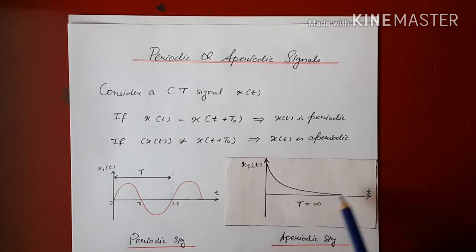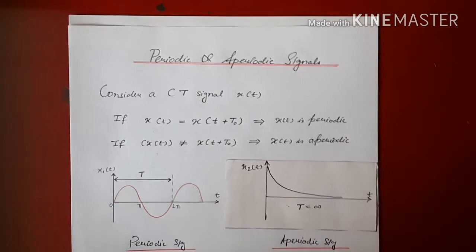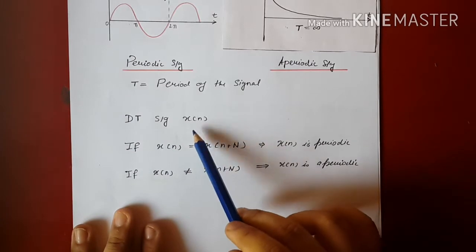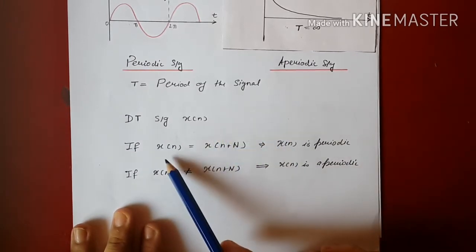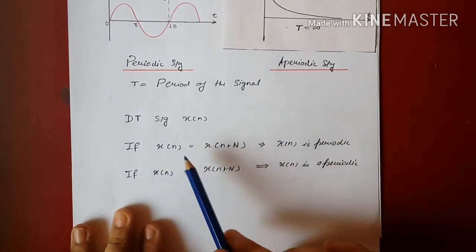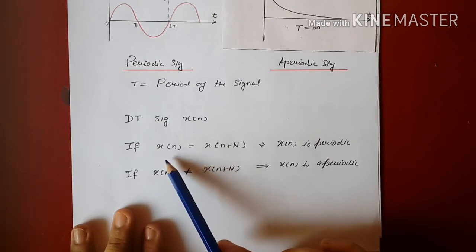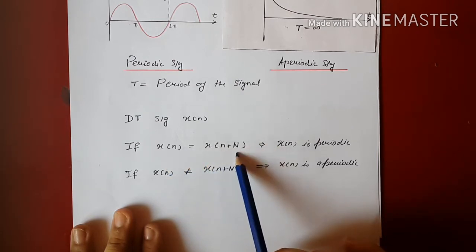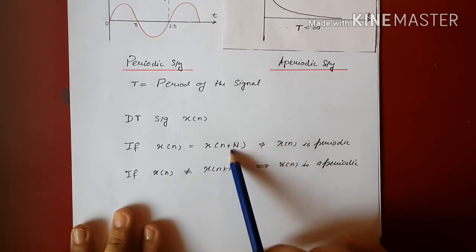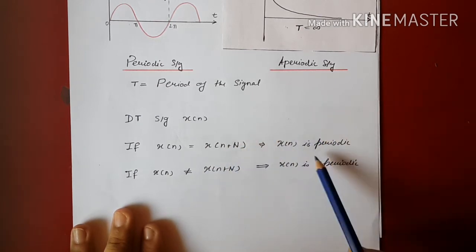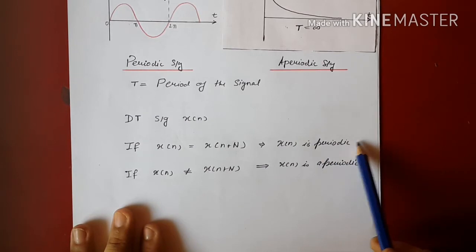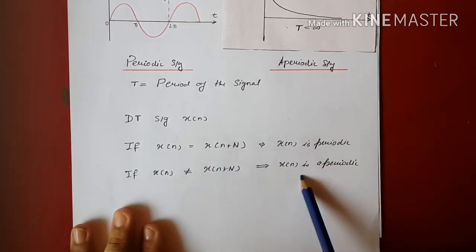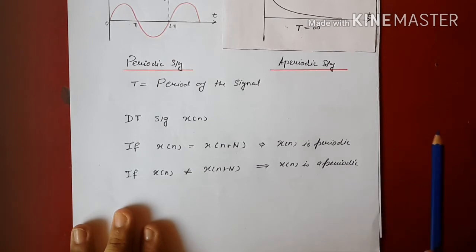Similarly, for any discrete signal x[n], the periodicity and aperiodicity can be represented mathematically as: if x[n] = x[n + N], where capital N is the fundamental period, then x[n] is a periodic discrete time signal. If this is not true, then x[n] is an aperiodic discrete time signal.